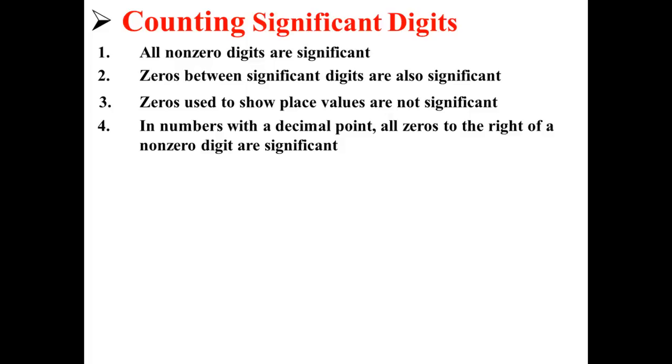Second, zeros between significant digits are also significant. Third, zeros used to show place values are not significant. And four, in numbers with a decimal point, all zeros to the right of a non-zero digit are significant.